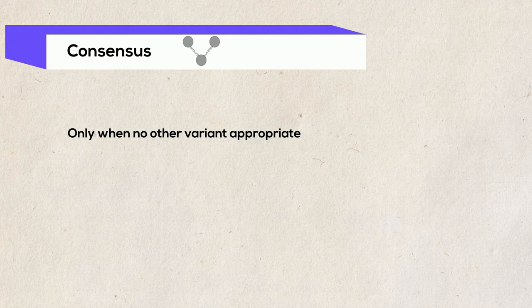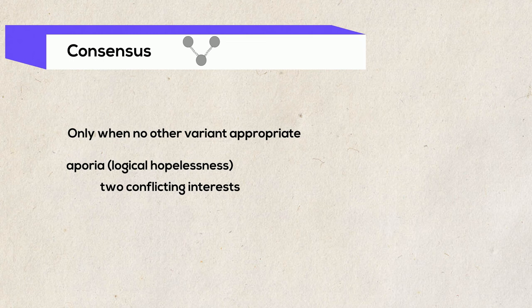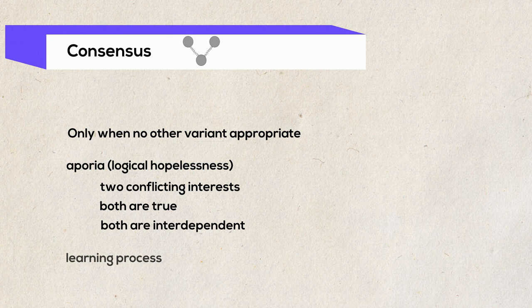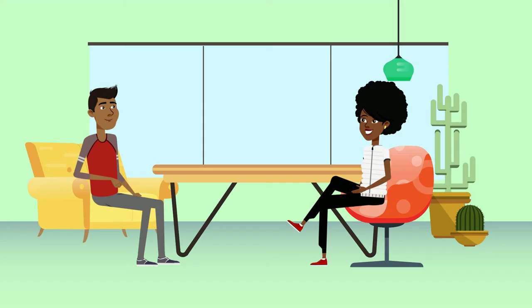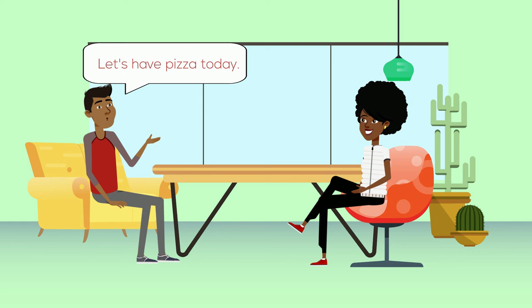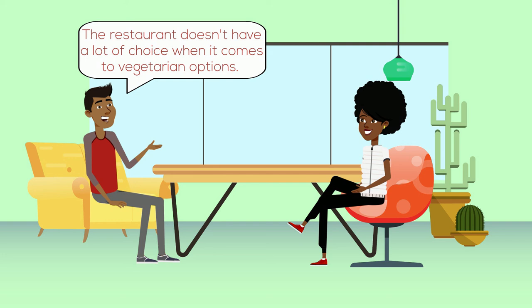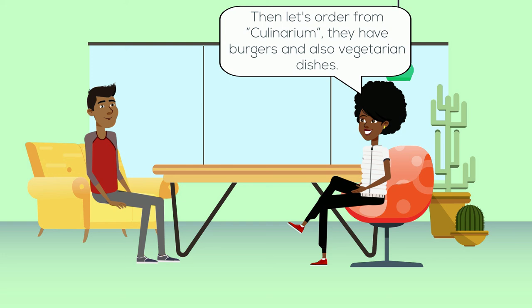A consensual solution can only be reached if the parties couldn't find a solution through the other conflict resolution variants. In this case, there is a so-called aporia — a logical hopelessness — characterized by three elements: there are two conflicting interests or claims; both are true or justified; and both are interdependent. To resolve this situation, the two parties must go through a learning process, resulting in a jointly developed resolution that reconciles the two opposites. 'Let's have pizza today.' 'No, I don't like pizza.' 'What do you like to eat then?' 'Let's order burgers.' 'The burger restaurant doesn't have a lot of choice when it comes to vegetarian options.' 'Then let's order from Culinarium. They have burgers and also vegetarian dishes.' 'Yes, perfect.'